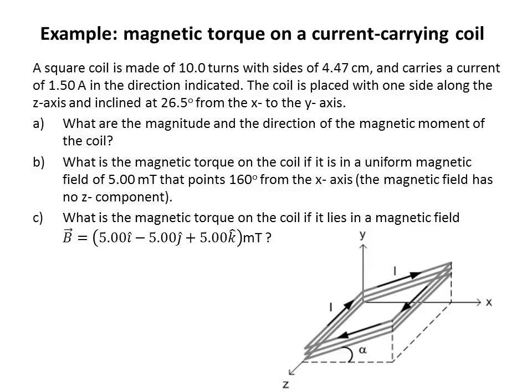Here's an example involving the magnetic torque on a current-carrying coil. A square coil is made of 10 turns with sides 4.47 cm and carries a current of 1.5 Amperes in the direction indicated. The coil is placed with one side along the z-axis and inclined at 26.5 degrees from the x- to the y-axis.